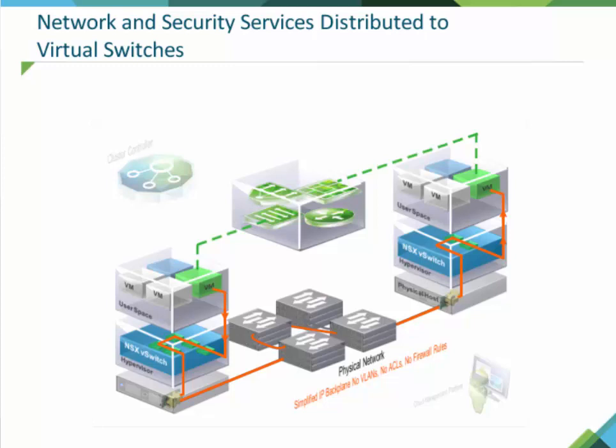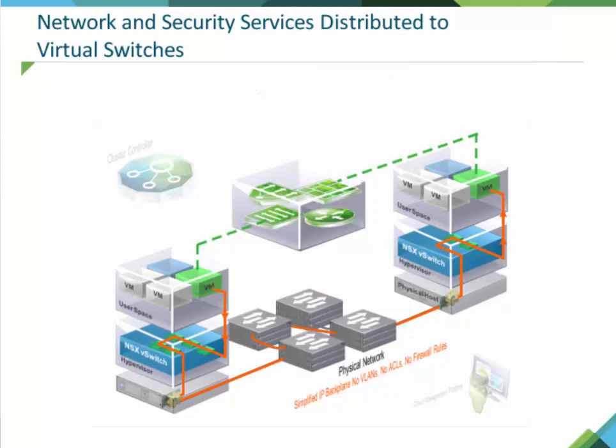The packet is decapsulated at the destination hypervisor virtual switch, and egress network services and rules are delivered and enforced. In this way, the communication is simply using the underlying physical network as an IP backplane. It does not require spanning tree protocol, VLANs, access control lists, or firewall rules.